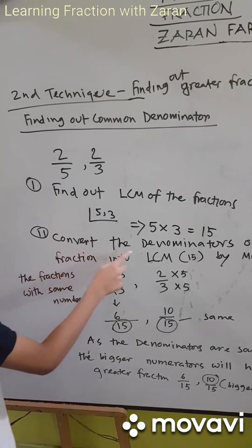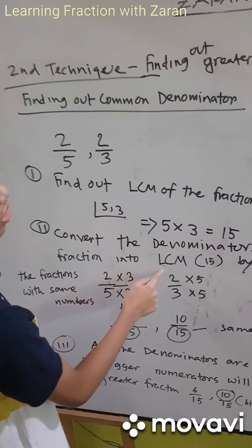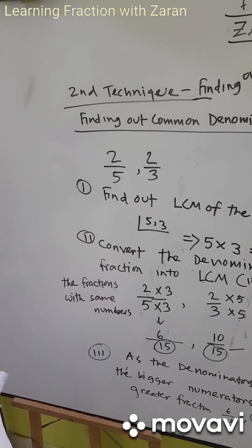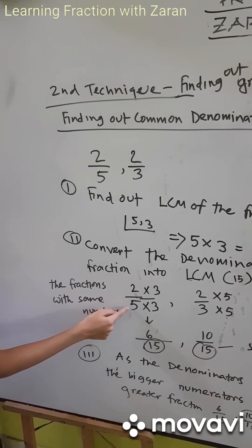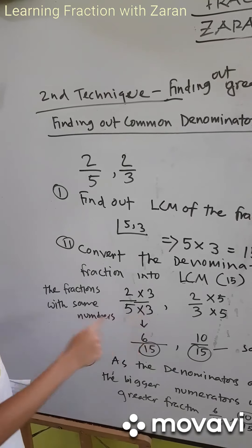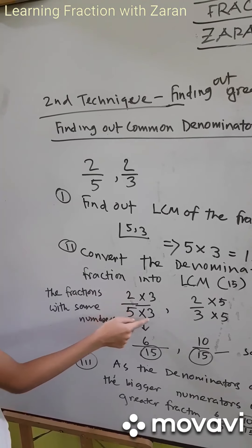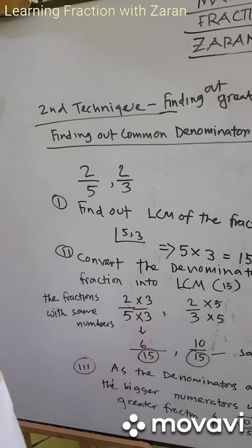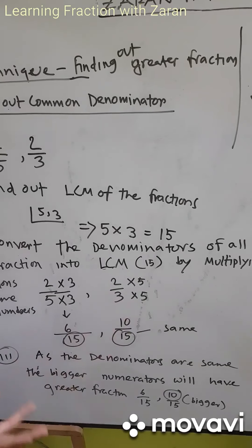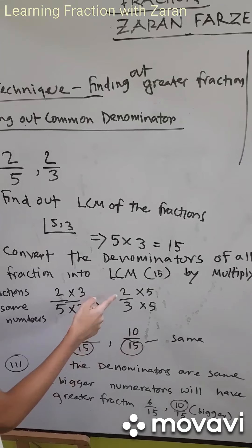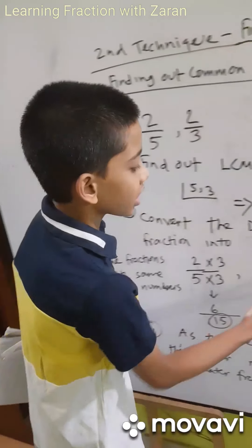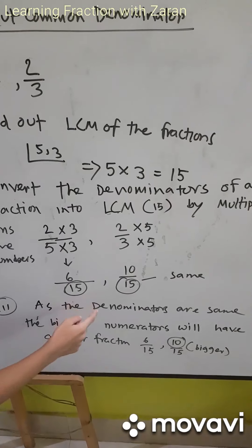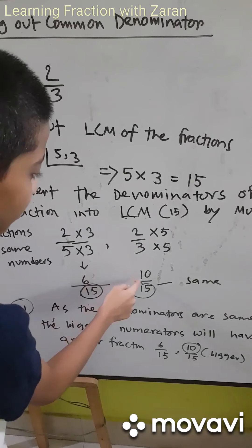The second step is to convert the denominators of all fractions into the least common multiple, which is 15, by multiplying the fractions. To make 5 into 15, multiply by 3 — so we multiply the numerator 2 by 3 as well, giving 6 by 15. For the other fraction, 3 multiplied by 5 is 15, so we multiply the numerator 2 by 5, giving 10 by 15.